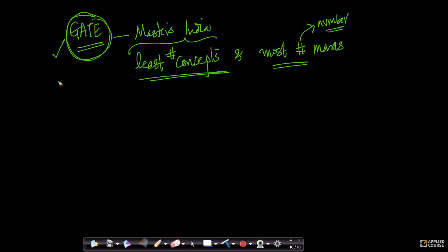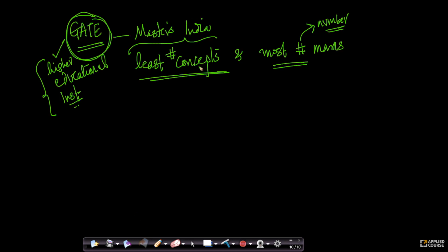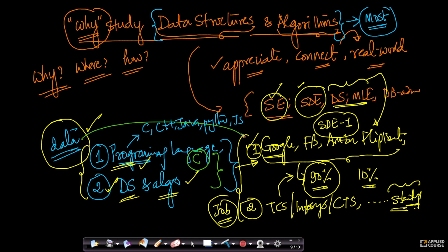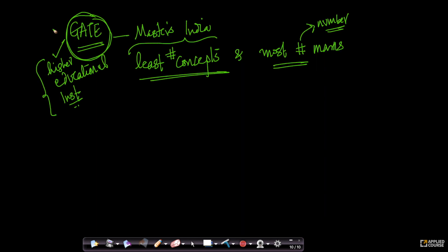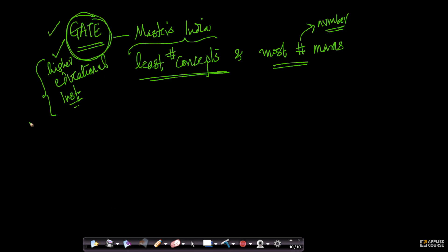This is proof from two sources: one data point comes from companies across the board, and another from competitive exams conducted by India's best higher education institutions. This is proof in the pudding that these subjects are the most important ones for you to be a successful software engineer or a master's program graduate student. But where are we going to apply all of these concepts in the real world?